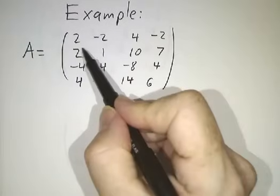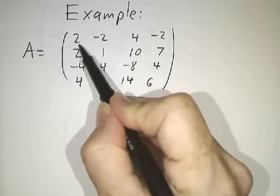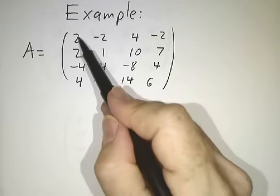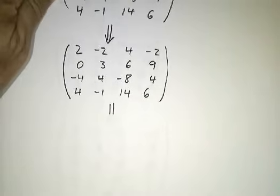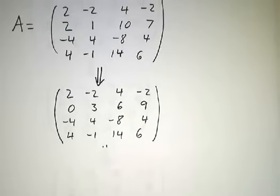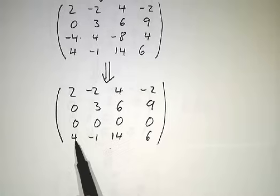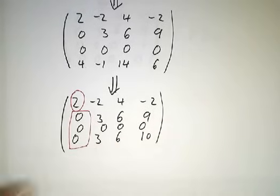The first thing we do is identify the first pivot. We want all the entries below the pivot to be zero, so we need to turn those entries into zeros by adding multiples of the first row to all the other rows. We subtract the first row from the second row, then add twice the first row to the third row to eliminate the negative four, then subtract twice the first row from the last row to eliminate the four. Now below the first pivot is nothing but zeros.